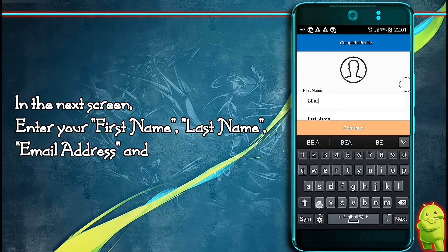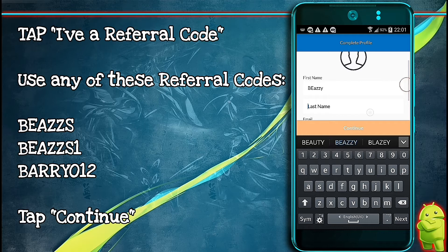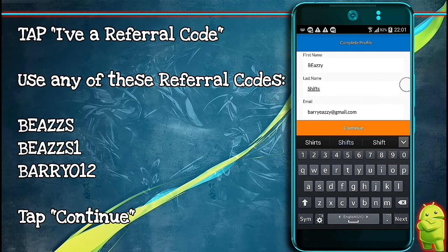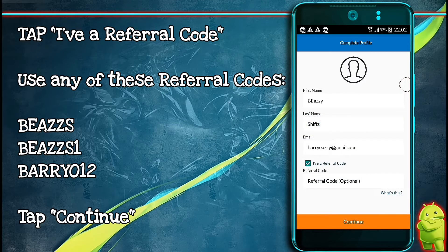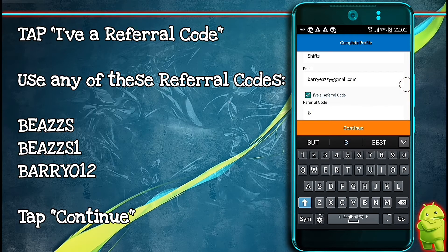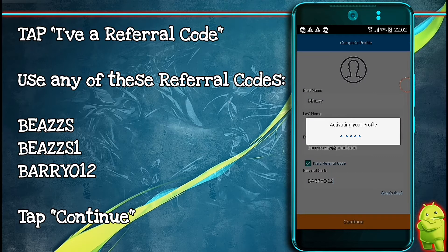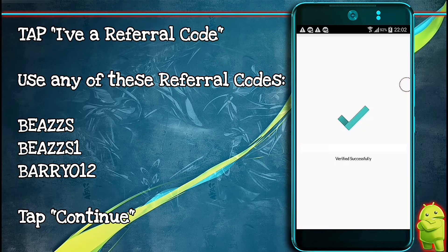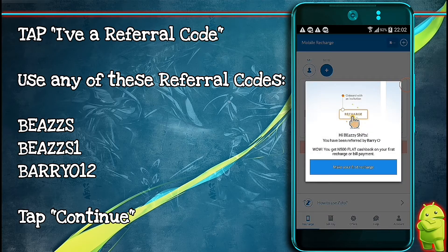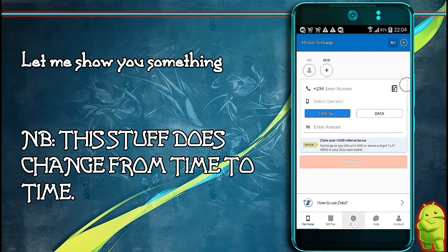Now input your first name, last name, and email address. Tap 'I have a referral code' and input any one of these referral codes: BASITS, BASITS1, or BARRY01. Tap continue. You can see over there you have been referred by Barrio. You get 500 Naira flat cashback on your first recharge or bill payments. So let's do this.